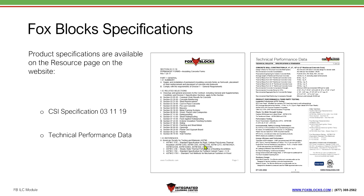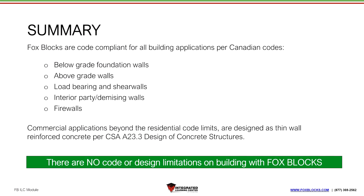FoxBlock specifications are available on our website, typically for commercial work under CSI specification 03 11 19. Technical performance data sheets are also available to submit, and these are found on our resource page on our website.